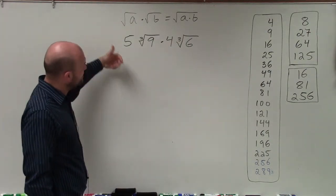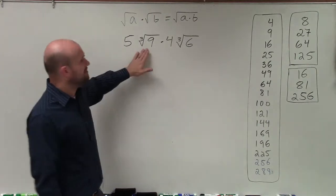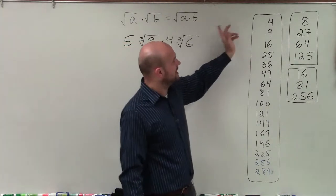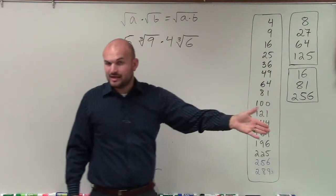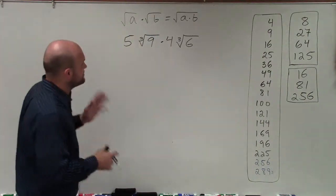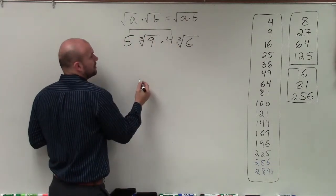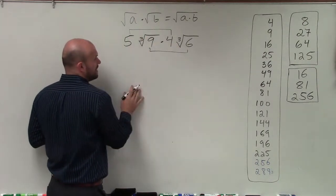First of all, we always want to try to simplify. But notice we're taking the cube root this time, not the square root. A lot of people say, oh, the square root of 9 is 3. But this is the cube root - what number multiplied by itself 3 times. In this case, we're just going to have to multiply our outside numbers and our two radicands.